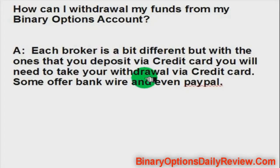And then anything over and above that, you can get via bank wire, or some brokers offer PayPal. So say you put $500 on your credit card, and a month later you have $1,000. You can withdraw $500, pay off that credit card bill, and it'll be sent right to your credit card.